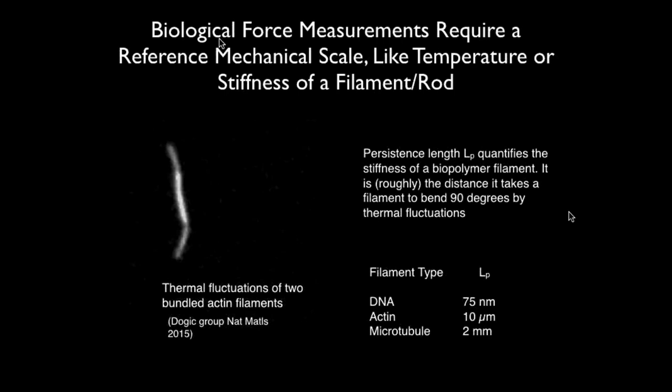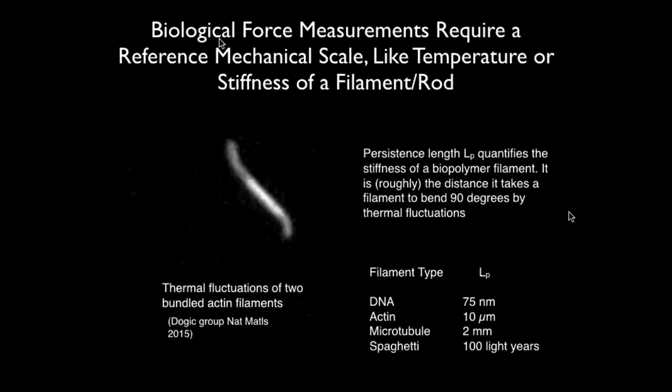Yes, uncooked vermicelli — it will definitely get smaller when cooked. What do you think? Someone suggests 50 meters. The actual answer is about 100 light years for a stick of spaghetti. So these biopolymers are really very floppy things at our scale, but at the scale of nanometers or microns they actually look pretty rigid.